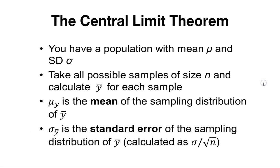And we call this the Central Limit Theorem. And so this assumes that we have some population with a mean mu and a standard deviation sigma. We can take all those possible samples of that size and calculate y bar or the mean for each sample.